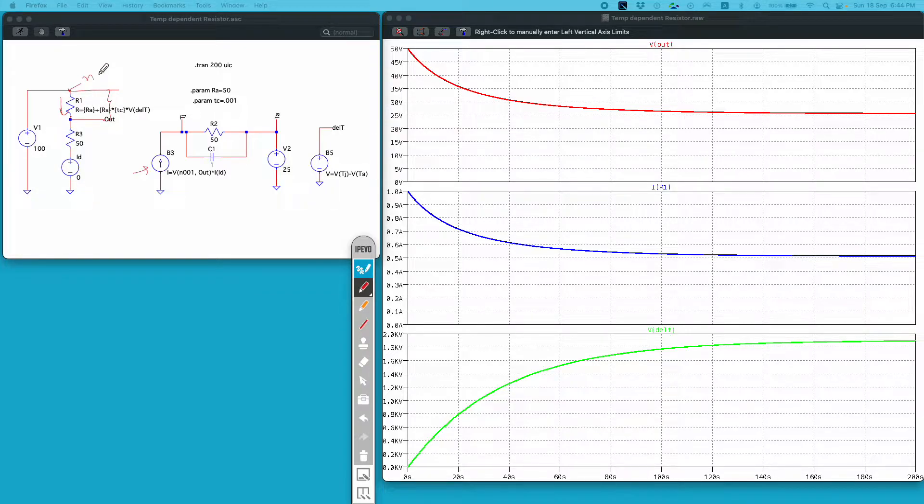This node is N001 in this simulation and this node I have labeled as out. And current I am measuring using this 0 voltage source.